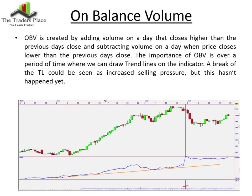In this example, I've drawn in a trend line on on balance volume. As long as OBV remains above the trend line, I consider the stock to have more buying pressure than selling pressure. This is over a period of time — it's not something that will give you any timing. Just because OBV crosses down over there, there's not necessarily a reason to exit or short the stock.